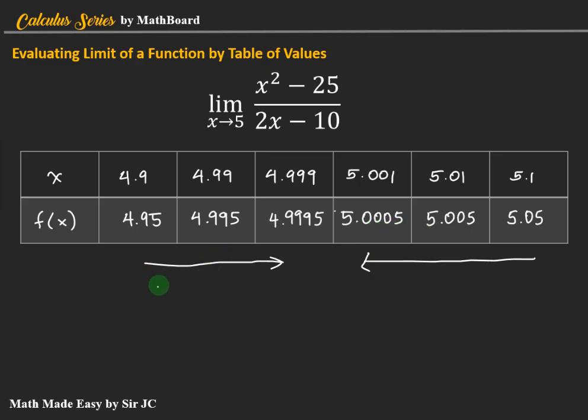So using the principle, the limit of the function, which is x squared minus 25 over 2x minus 10 as x approaches 5 from the left equals 5. And we know that when the left and right-hand side's limit are equal, the limit exists. And thus, we can say that the limit of this function as x approaches 5 is equal to 5.